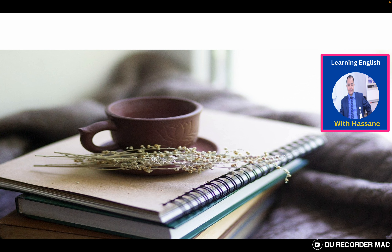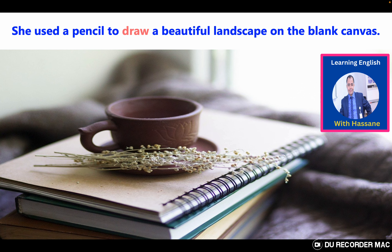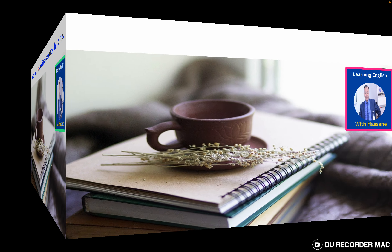The next word is 'draw.' Some students mispronounce it — it's not 'draw' with a W sound. When we have A and W together, it's just 'draw.' In a sentence: 'She used a pencil to draw a beautiful landscape on the blank canvas.' She was holding a pencil and making a picture of a beautiful landscape on a blank canvas — a piece of cloth.